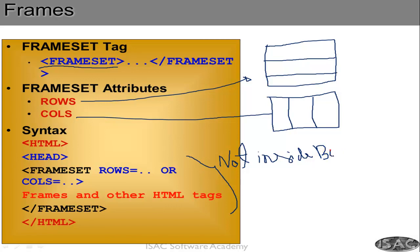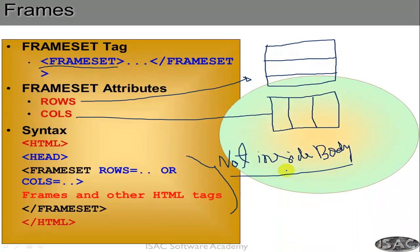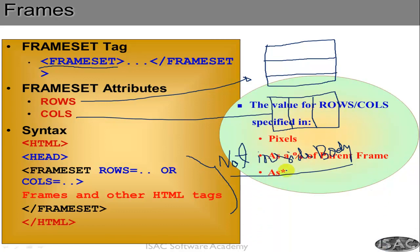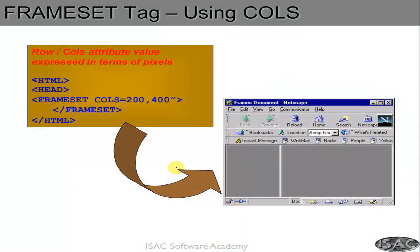The value for rows and columns can be specified in pixels or as a percentage of the parent frame. You can say the first row is 20 pixels, next 40 pixels, another 60 pixels, or you can say 10%, 20%, 40%. If you want two columns, you can say 50% and 50%. That is the way it works.